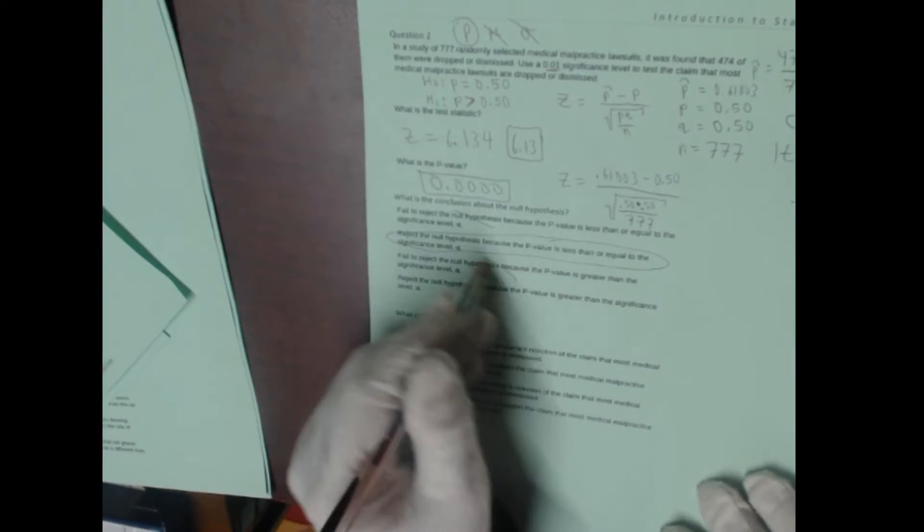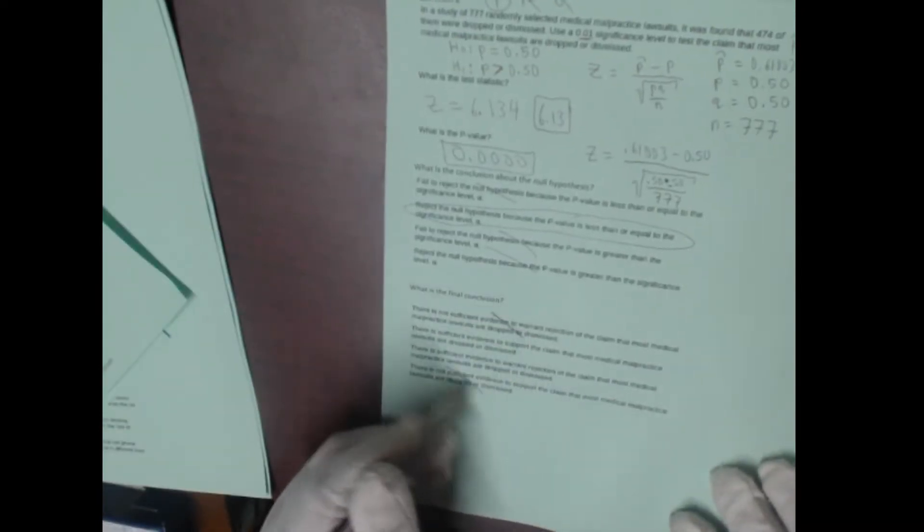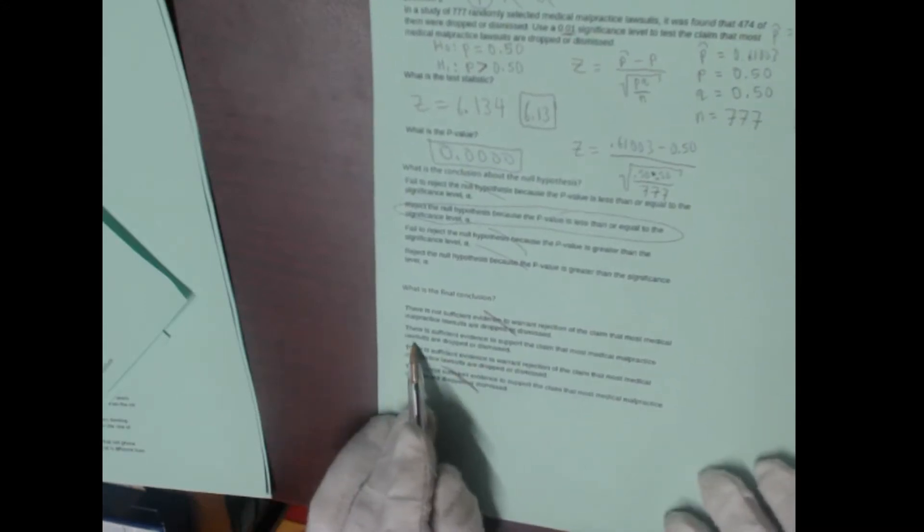So, let's answer these two questions. We are definitely rejecting this null hypothesis because the p-value is less than alpha, as we predicted. There is definitely sufficient evidence, more than enough sufficient evidence, to support the claim that most medical malpractice lawsuits are dropped or dismissed. That is definitely the case. So, we're not rejecting the claim that most are dismissed. There's evidence to support the claim that most are dismissed.